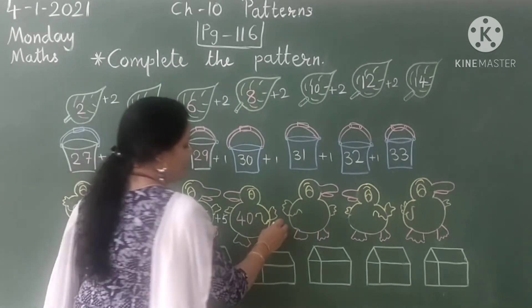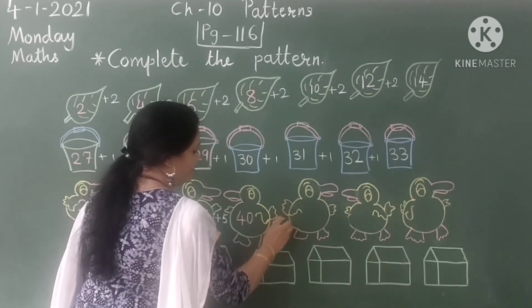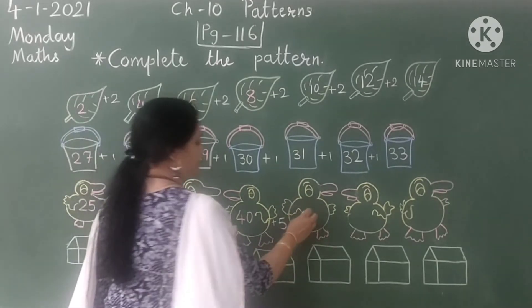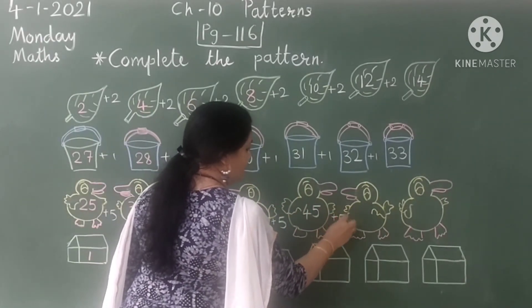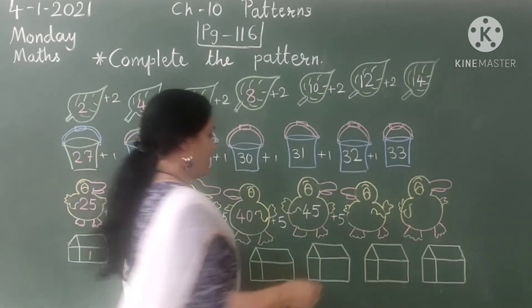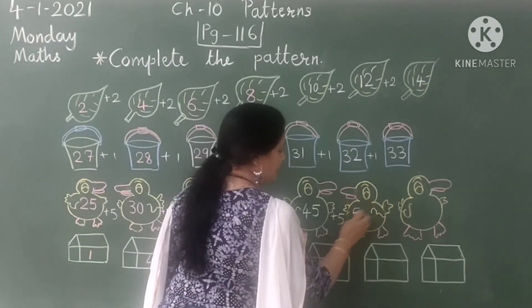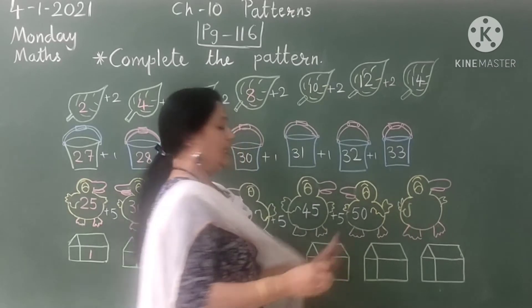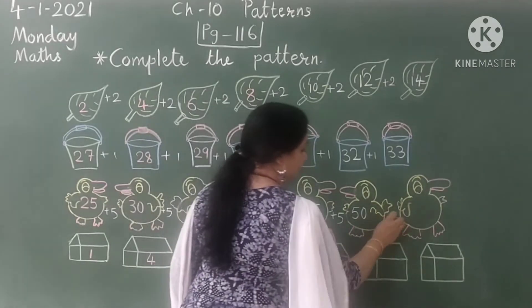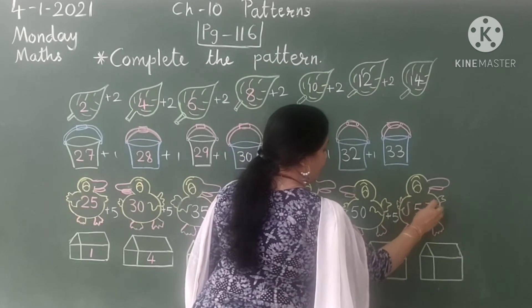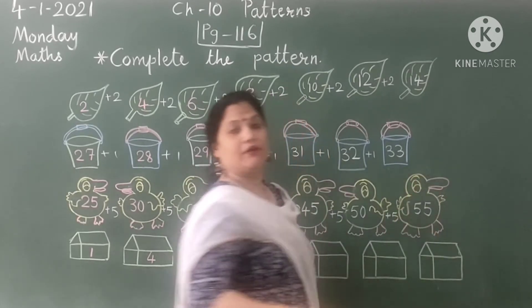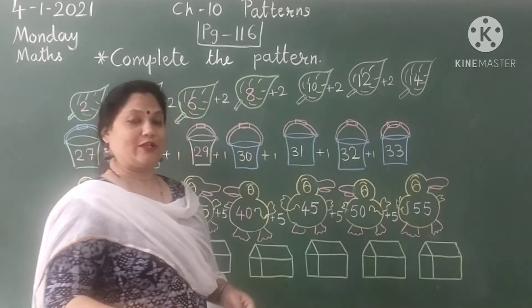Now let's add 5. So it will become 45. Let's add 5 more. 45 plus 5 is 50. Let's add 5 more. So it will be 55, 50, 5. So these patterns also complete.